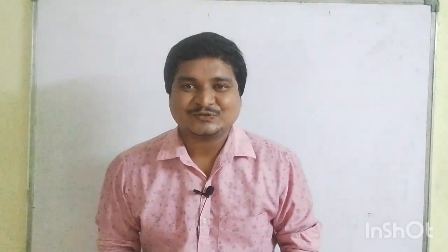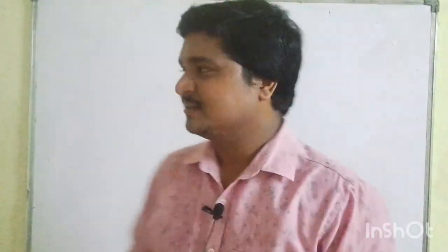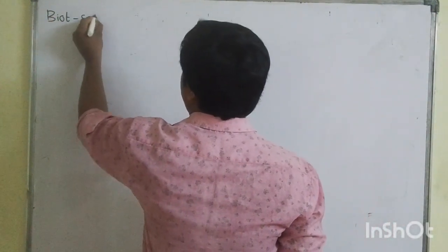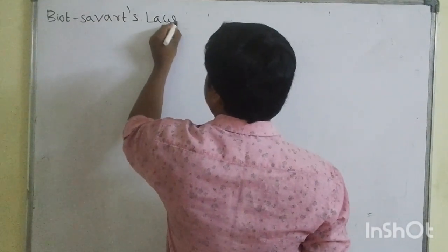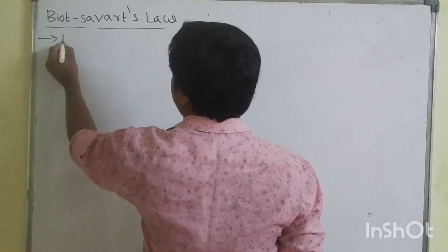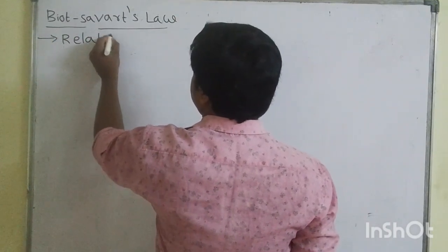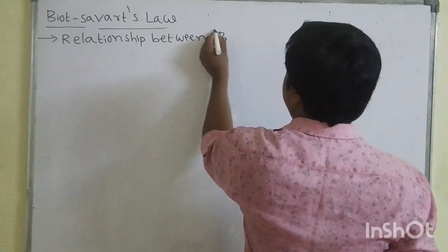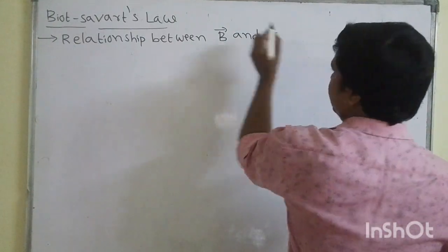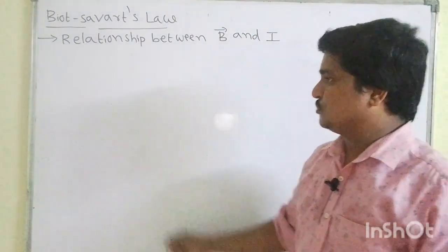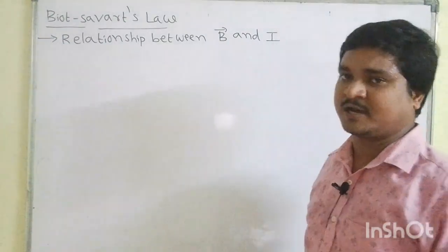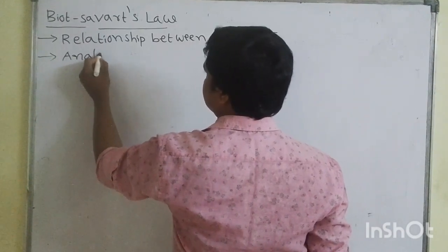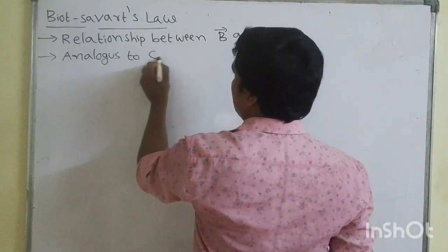Hello dear students, today our topic is from magnetic field — Biot-Savart law. This law will show the relation between magnetic field induction and also current. Biot-Savart law is analogous to Coulomb's inverse square law.